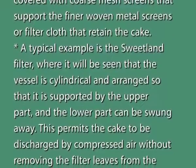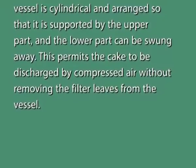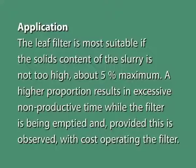A typical example is the Sweetland filter, where the vessel is cylindrical and arranged so that the upper part supports it and the lower part can be swung away. This permits the cakes to be discharged by compressed air without removing the filter leaves from the vessel. Advantages include that the slurry can be filtered from any vessel and the cake can be washed simply by immersing the filter in a vessel of water. Removal of the cake is facilitated by reverse airflow. The pressure difference may be obtained with vacuum or by using pressure up to the order of 8 bars. The leaf filter is most suitable if the solid content of the slurry is not too high, about 5% maximum.